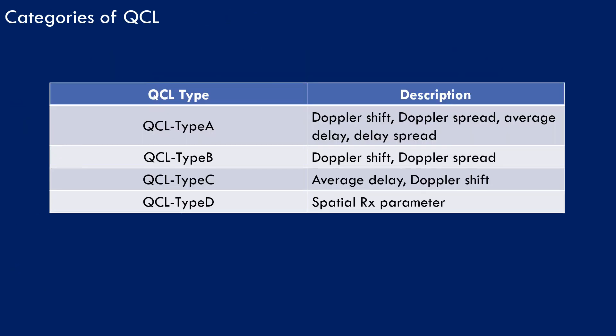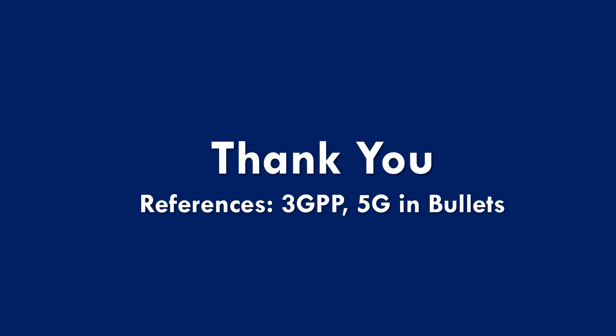3GPP has specified categories of QCL to define which radio propagation characteristics are shared between two transmissions. There are four types of QCL, each depending on the type of radio propagation characteristics they share.